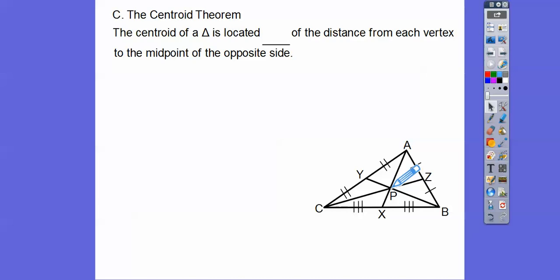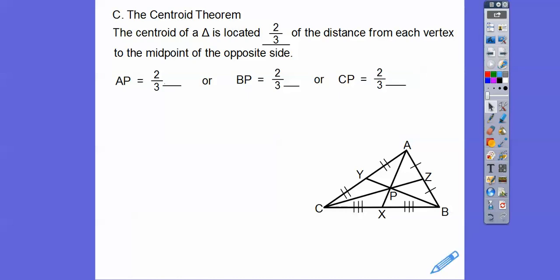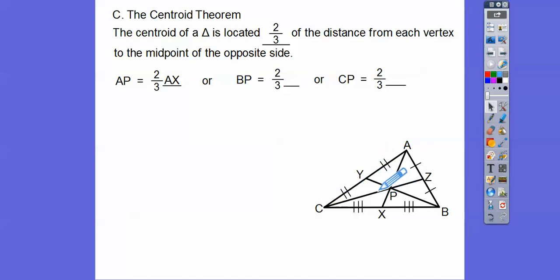The centroid is located two-thirds of the distance from each vertex to the midpoint of the opposite side. So AP is two-thirds of the whole length AX. BP is two-thirds of its whole length, and CP is going to be two-thirds of its whole length. So if it's two-thirds, then the other piece must be one-third. If this length is two-thirds, then this length is one-third of the whole length.